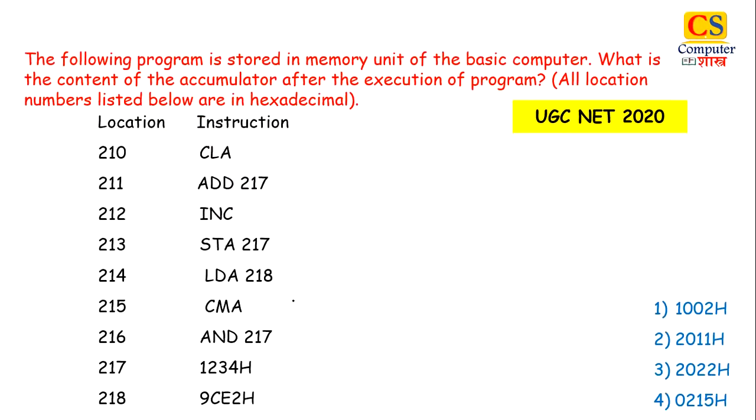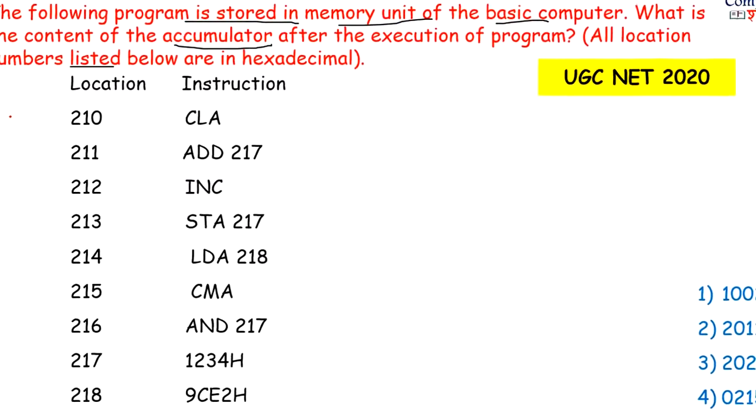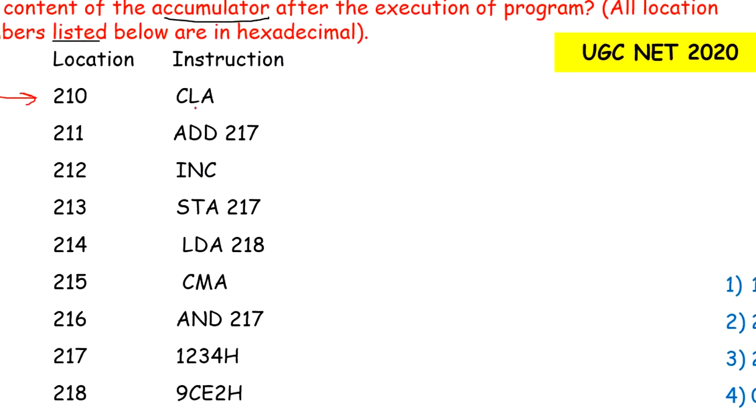Next question is: the following program is stored in memory unit of the basic computer. What is the content of the accumulator after the execution of program? All location numbers listed below are in hexadecimal. First instruction at location 210 is CLA. CLA means clear accumulator. Let us say this is my accumulator position.